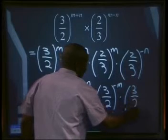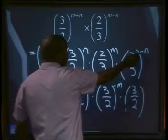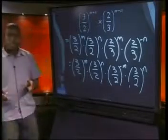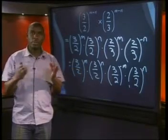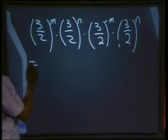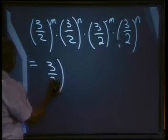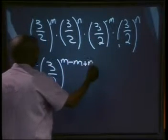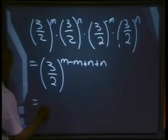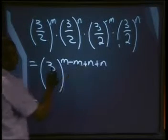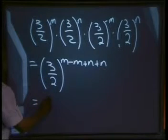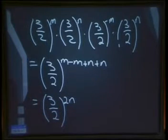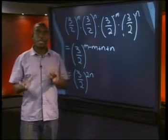Multiplied by 3 over 2. We've inverted this one as well — the exponent was negative so it becomes a positive exponent. As you can see, the bases inside the brackets are all the same, so we simply add the exponents. This gives 3 over 2 to the power of m plus (minus m) plus m plus n. m minus m gives 0, and n plus n gives 2n, so our answer will be 3 over 2, all to the power of 2n.